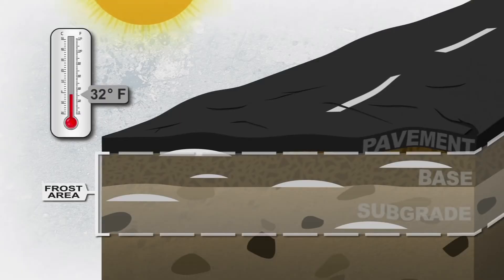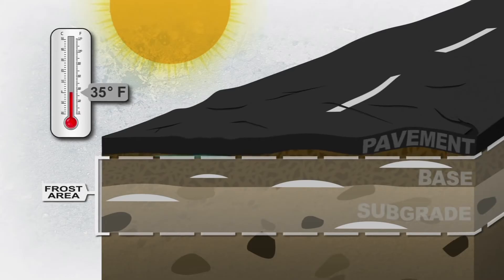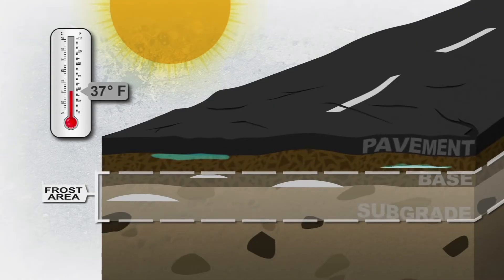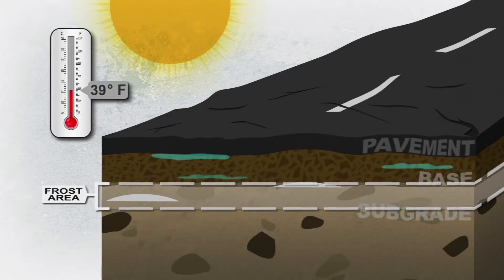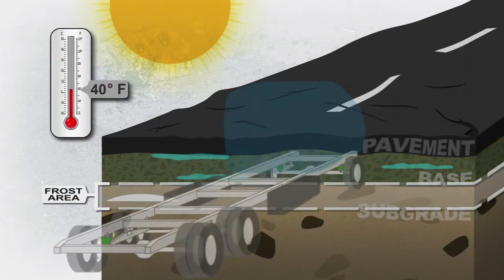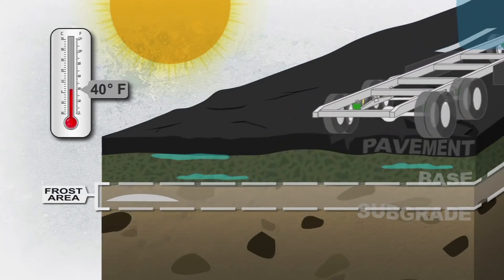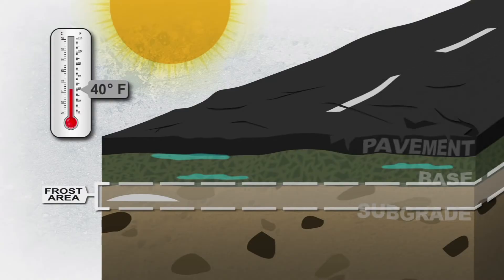In the spring, the ice in the soil begins to thaw just as it froze, from the top down. So now, water in the base layer is trapped between the pavement surface above and the still-frozen subgrade soil below. With nowhere to go, the extra water pulled in by capillary action during the freezing process saturates and weakens the base. Now, traffic loading damages the entire pavement structure.